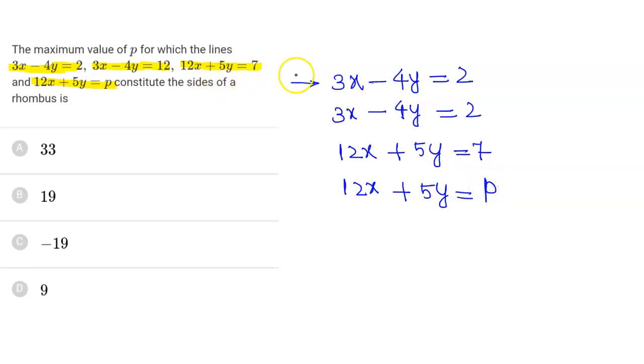These lines constitute the sides of a rhombus. If we draw the rhombus, let's label the vertices as A, B, C, D.